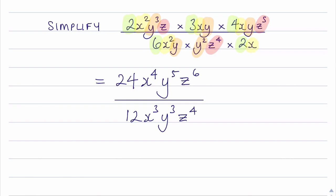Now that I've simplified the numerator and denominator, I'm going to see if there's anything that I can cancel. And again starting with the numbers, I've got 24 which is divided by 12, and that will give me 2.